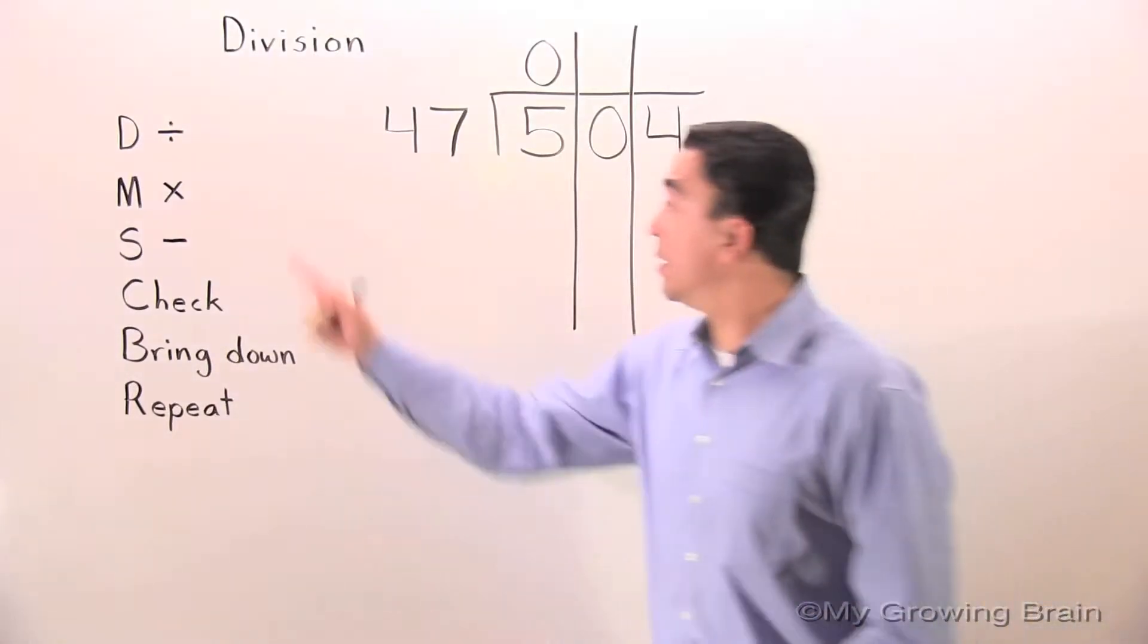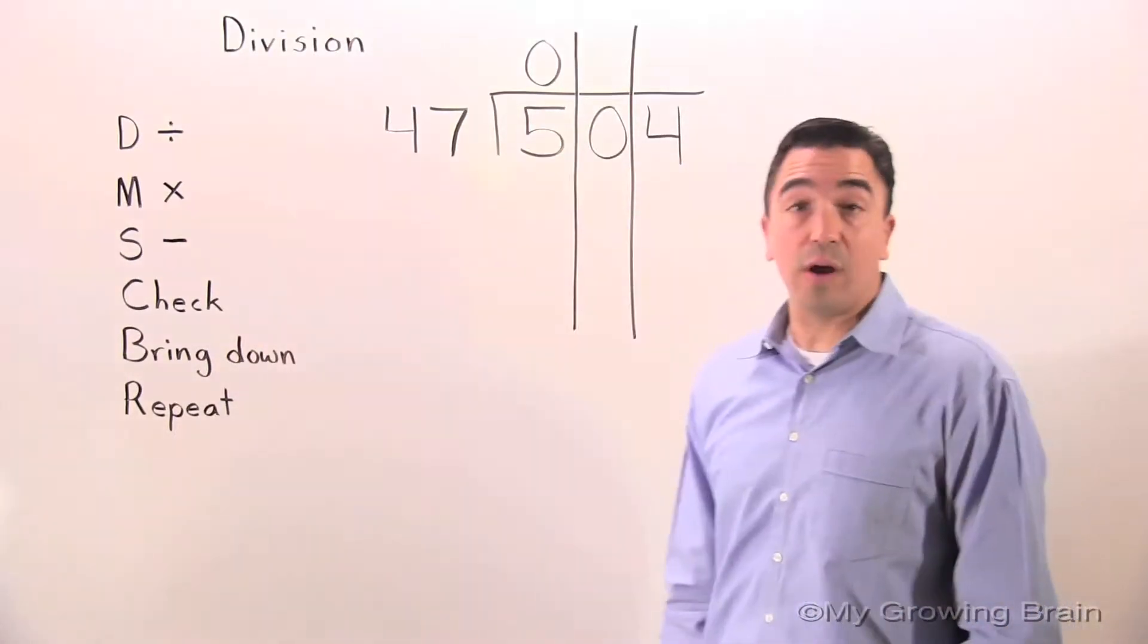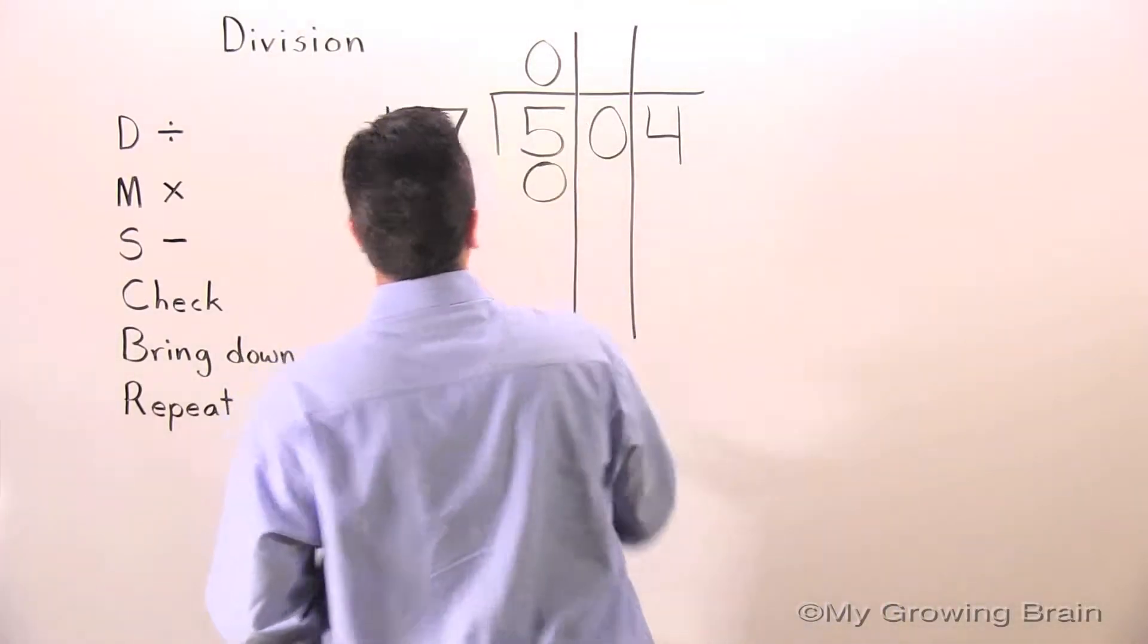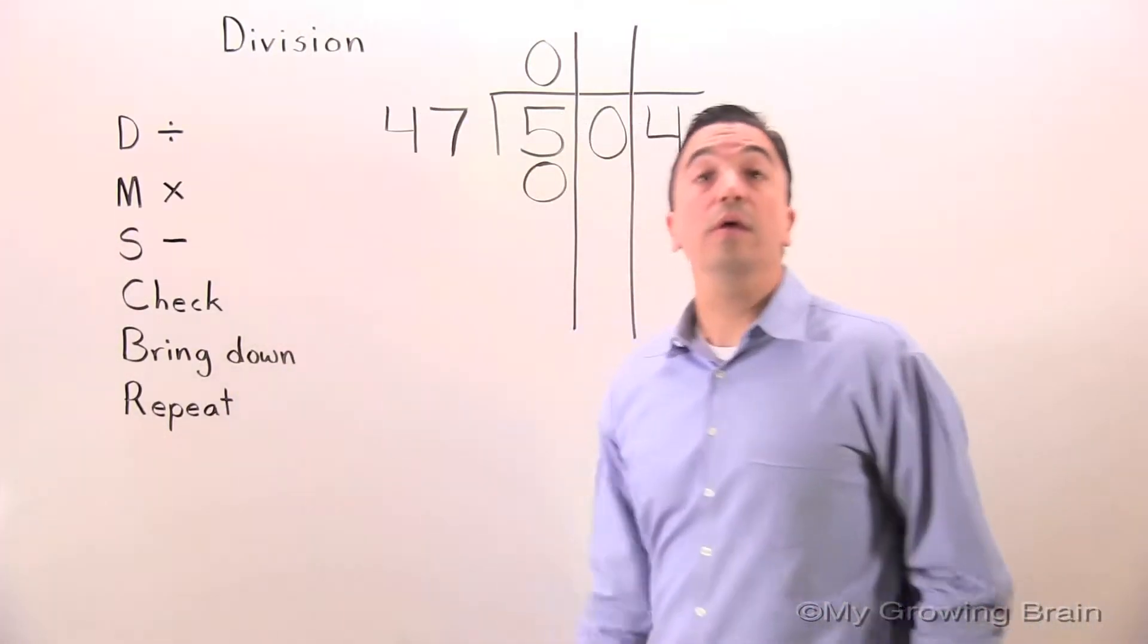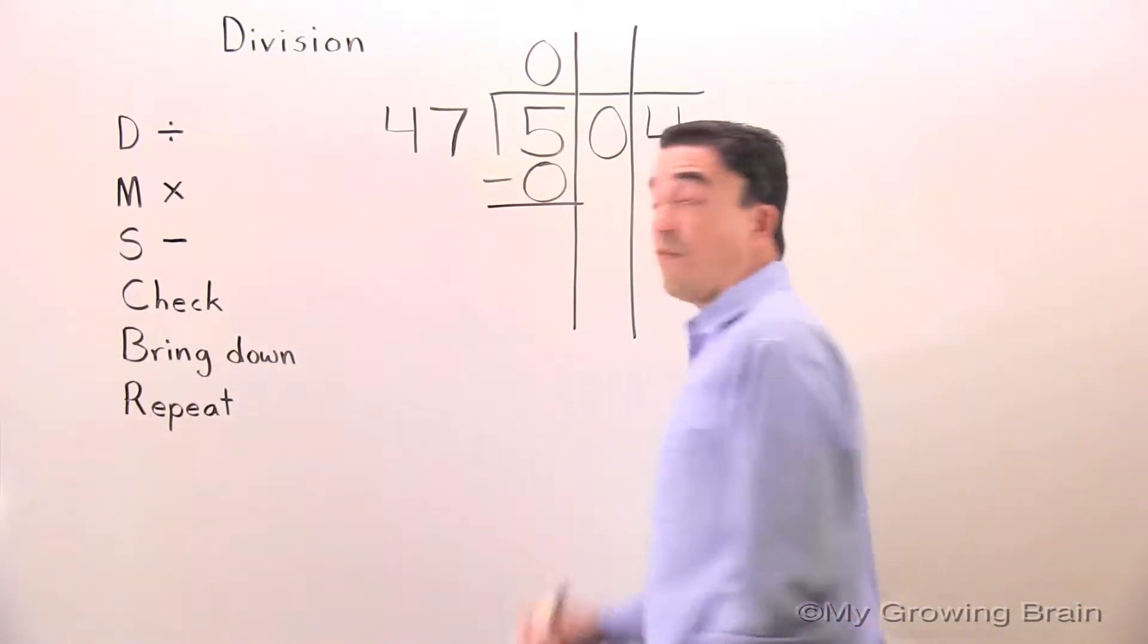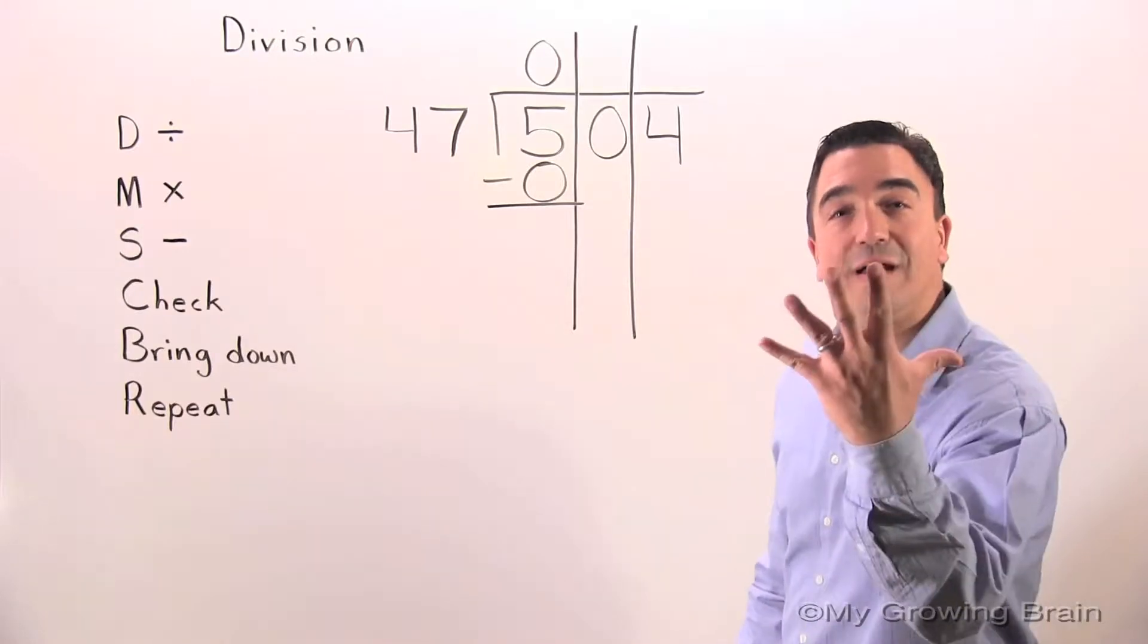Next step, multiply. 47 times zero. Zero. Next step, subtract. 5 minus zero, 5.